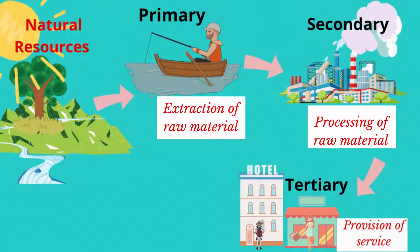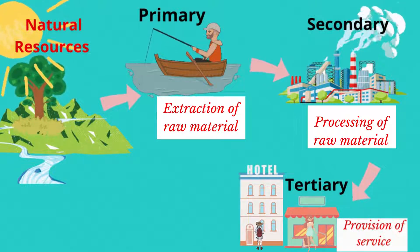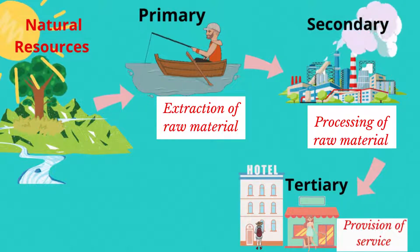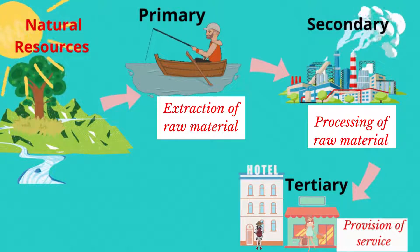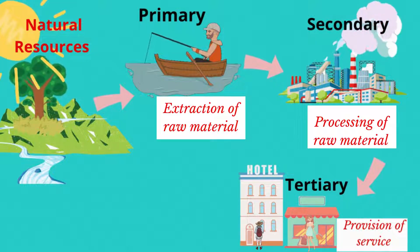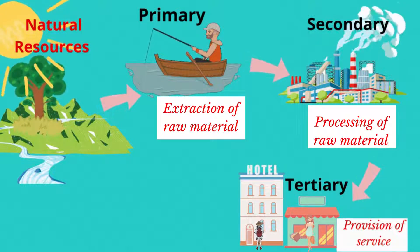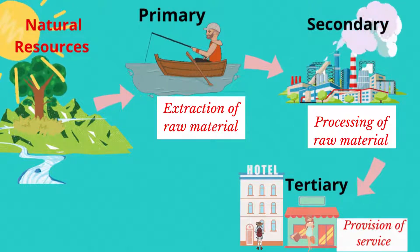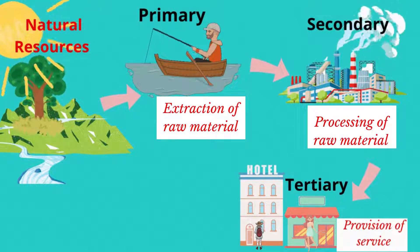While others will need to be altered or processed in order to be useful. This processing of raw material is carried out by secondary industries.